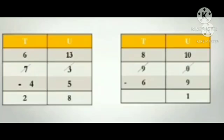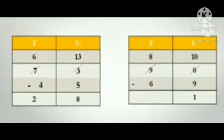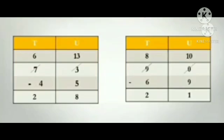Go to the tens place. You can see the number 9. If we borrow 1 ten from the tens place, then 9 will become 8, and the 1 will come to the units place as 10. Since there is nothing in the units place — 0 is there — 10 will remain as it is. Cancel the 0. So 10 units minus 9 units is equal to 1. Now tens place: 8 minus 6 is equal to 2. So the answer is 90 minus 69 is equal to 21.